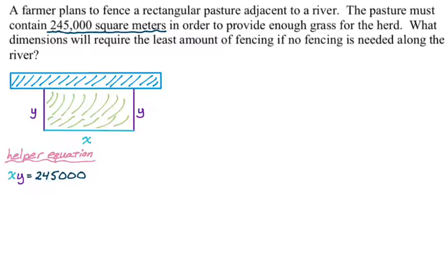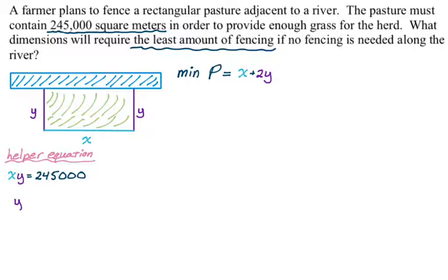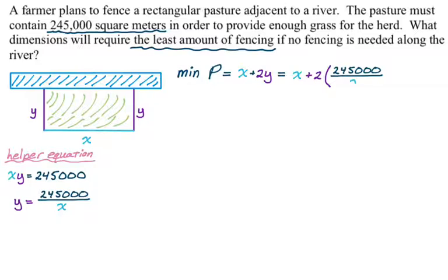We want the least amount of fencing, so we're minimizing the perimeter: x plus 2y. Too many variables — p, x, and y. Go back to the helper equation to eliminate one: y equals 245,000 divided by x. The goal is to turn the thing we're optimizing into a function of a single variable. Substituting in, the perimeter becomes a function of x alone, and now we can do calculus.